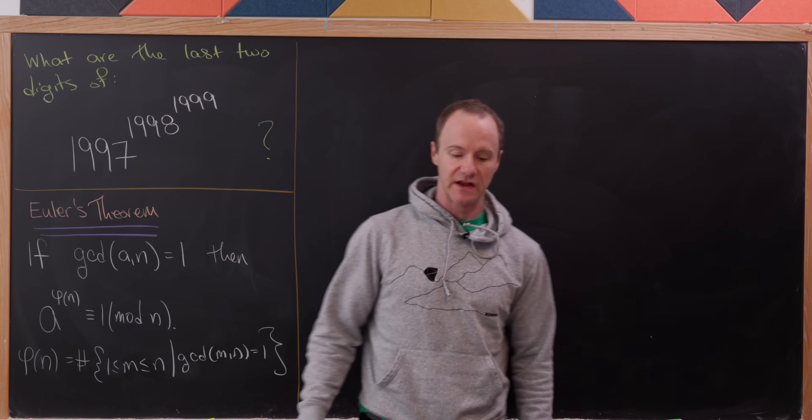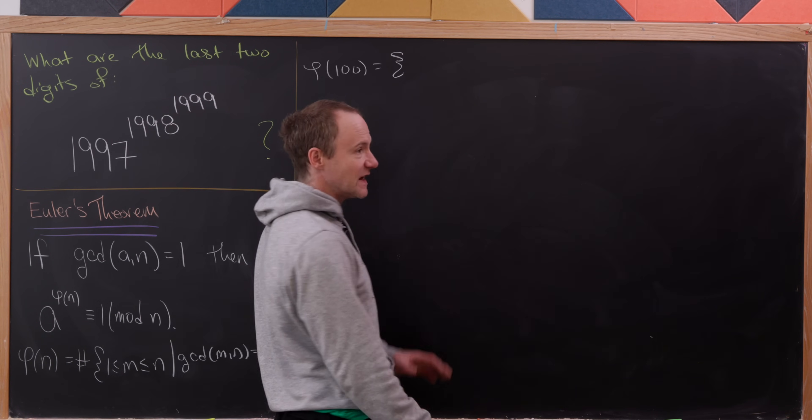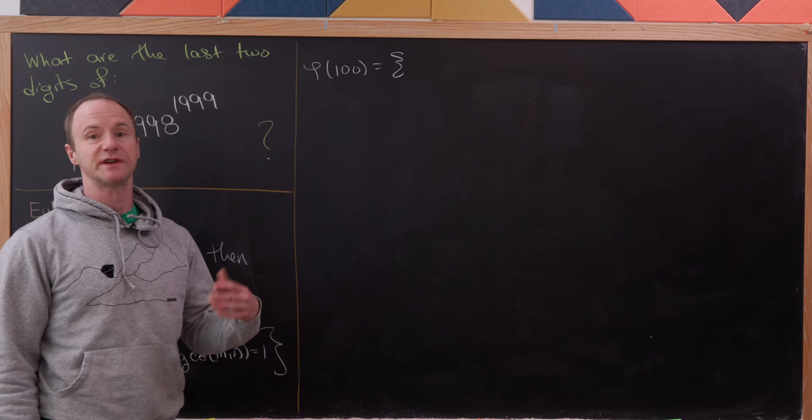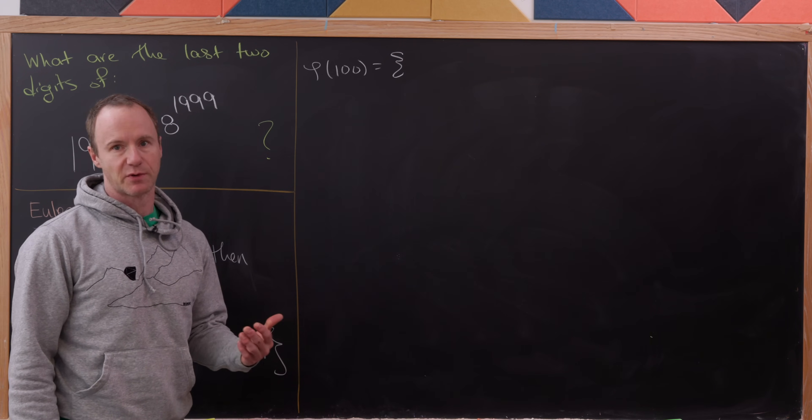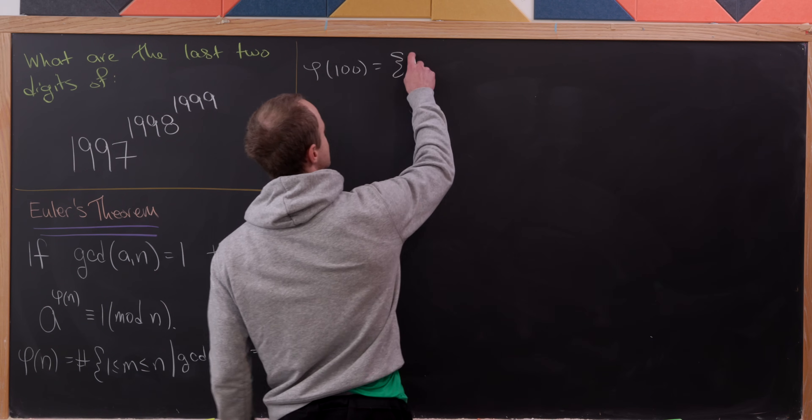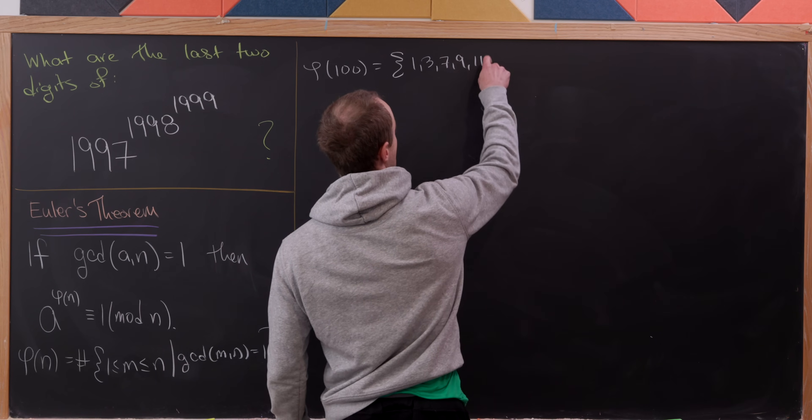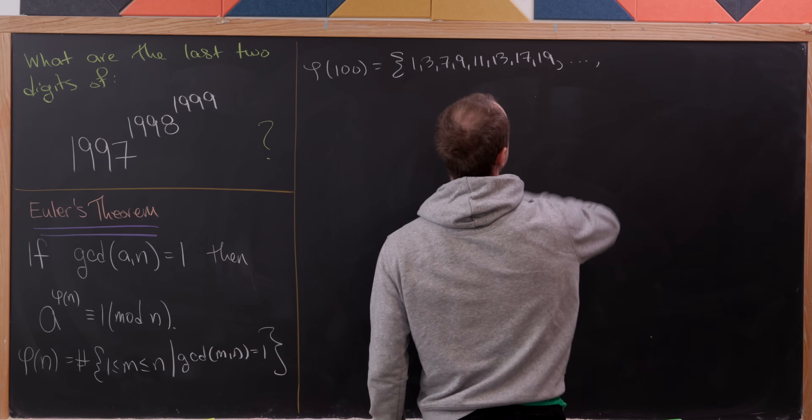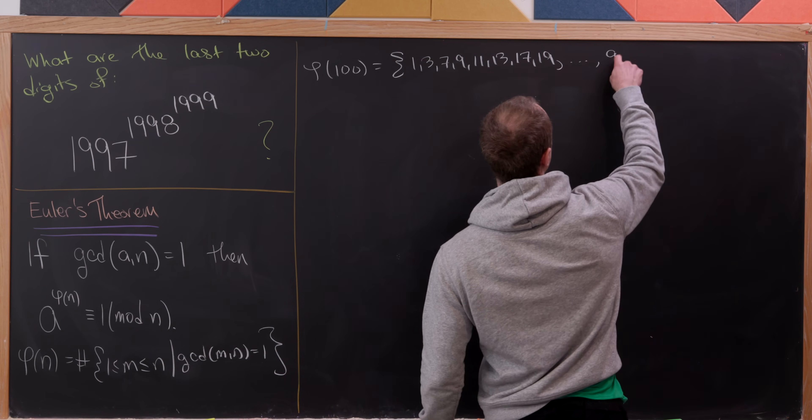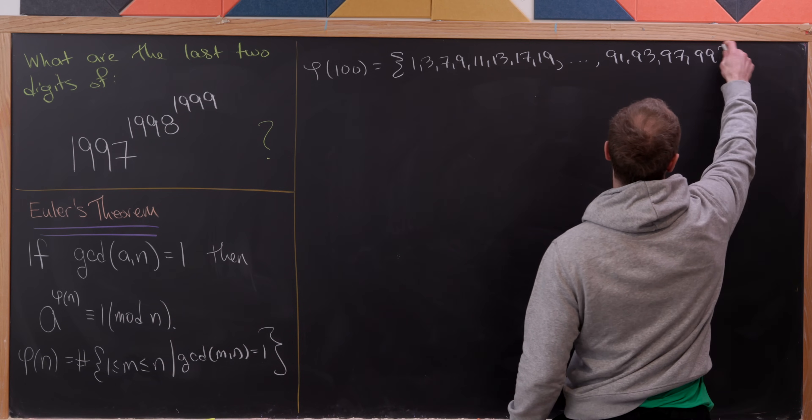How do we calculate φ(100)? It's actually pretty straightforward. The prime factors of 100 are only 2 and 5, so we just have to list the numbers that are not divisible by 2 or 5. So here we've got 1, 3, 7, 9, 11, 13, 17, 19, so on and so forth, all the way up to 91, 93, 97, and 99.